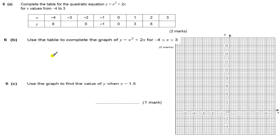Okay, here we have question 6. This question is about graphs, it's about a quadratic graph: y equals x squared plus 2x. You're asked to work out the values, or complete the values in this table, from minus 4 all the way up to 3.